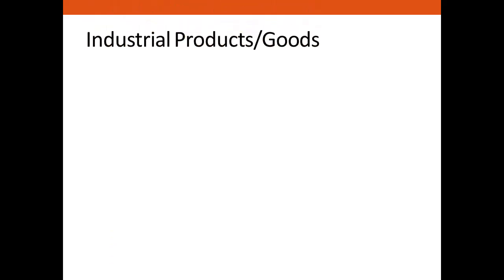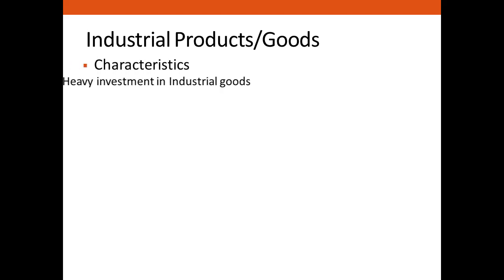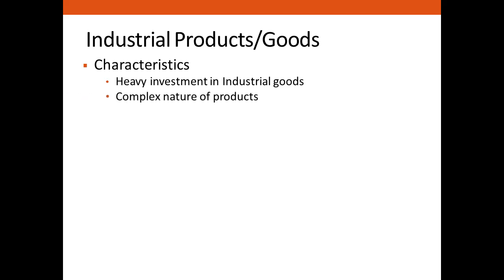The characteristics of industrial products start with heavy investment. The production of industrial goods requires heavy capital investment. Most companies involved raise capital by issuing shares and debentures, and also by borrowing from financial institutions. The second characteristic is the complex nature of products — industrial goods are complex due to their technical nature, so one must have technical knowledge to assess them.